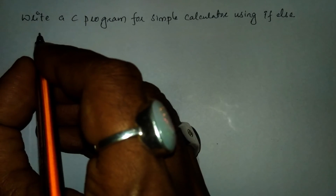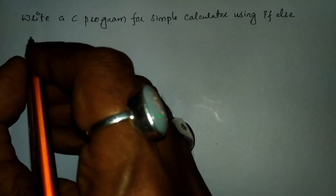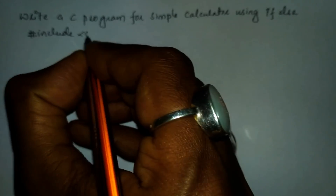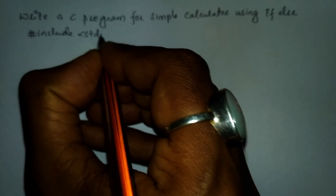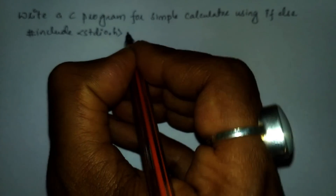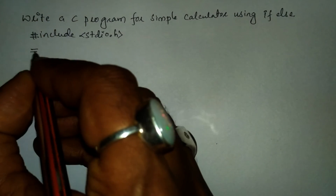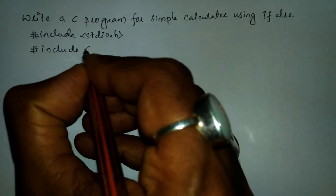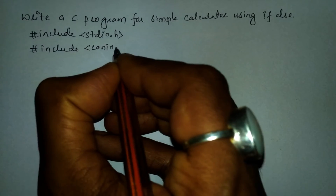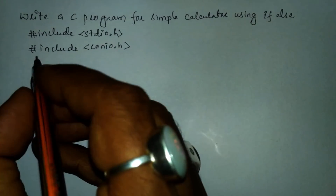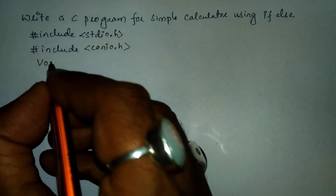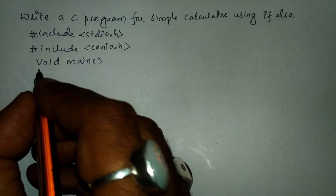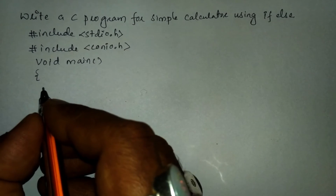Let us write the preprocessor directives: hash include in angular braces stdio.h. Next, preprocessor directives hash include in angular braces conio.h. Then we write the main function and the opening curly brace.